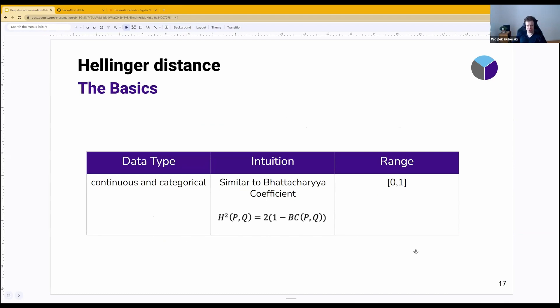It is similar to the Bhattacharya coefficient. The way it's similar is basically just a mathematical function where the square of Hellinger distance is two times one minus the Bhattacharya coefficient between two distributions. The Bhattacharya coefficient is also quite popular as a distance measure, as a divergence measure between two distributions.